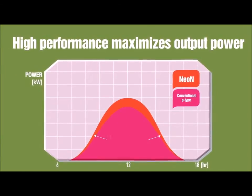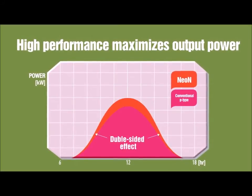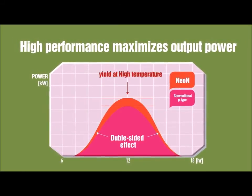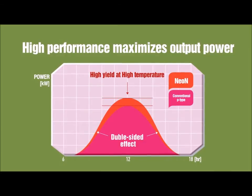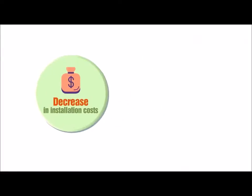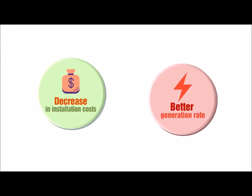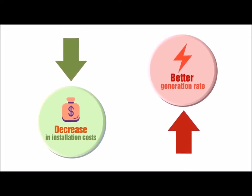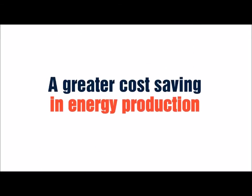In practice, the generation rate of neon is greater compared to the standard module in the period of dawn and sunset when the angle of incident is low and in high-temperature conditions. The long-term benefits are even more clear. The high-performance N-type leads to greater cost-saving in energy production owing to a decrease in installation costs and a better generation rate.